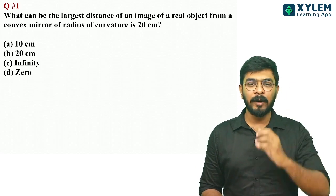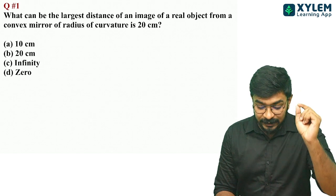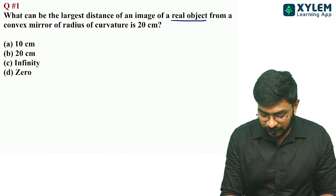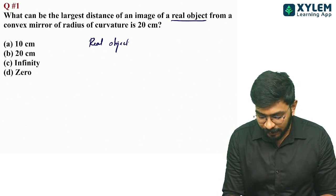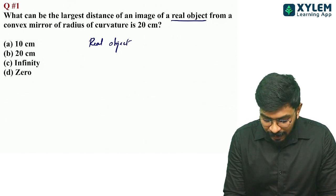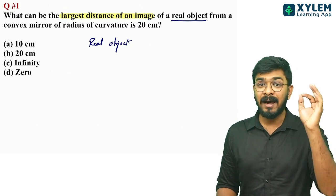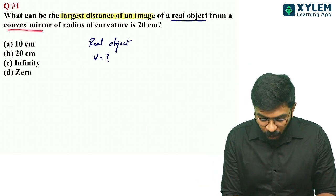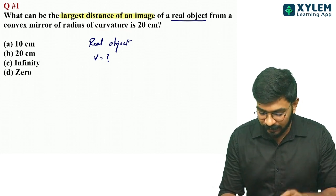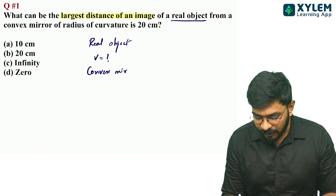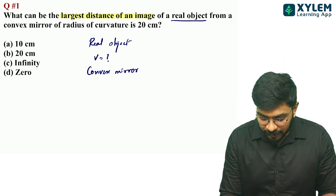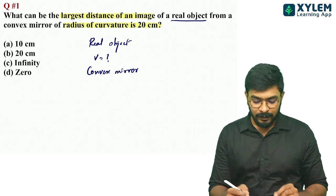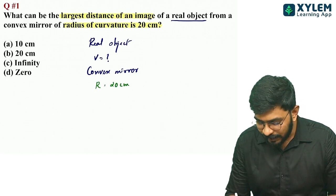First question: what can be the largest distance of an image of a real object from a convex mirror of radius of curvature 20 cm? So R is equal to 20 cm. This is a convex mirror.